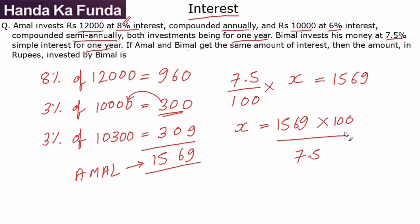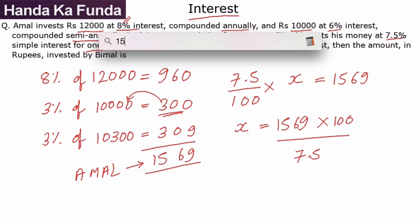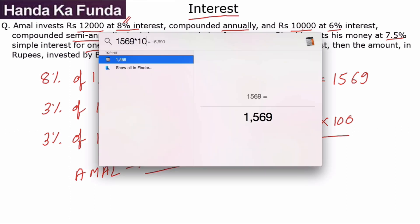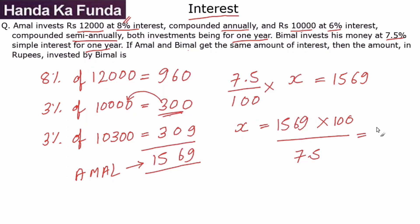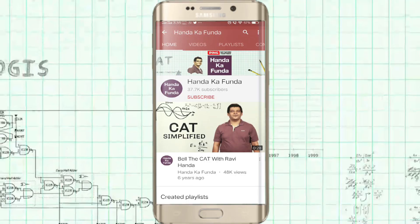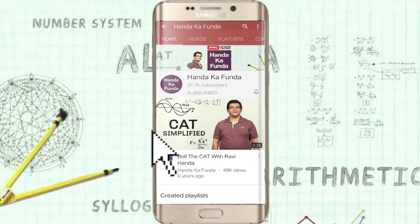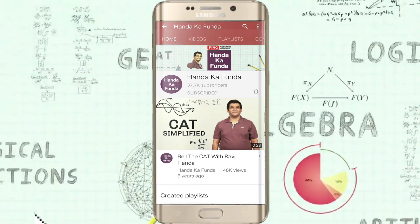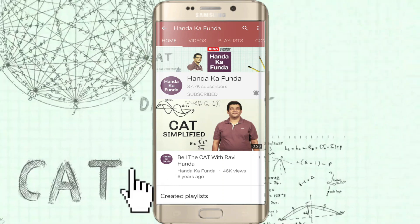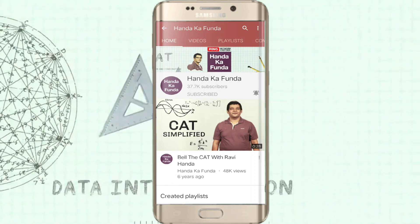Using the calculator: 1,569 into 100 divided by 7.5 comes out as 20,920. And that will be my answer. Hope you learned something from this video. Thank you. Please remember to subscribe to our YouTube channel and press the bell icon to get notifications of future videos.